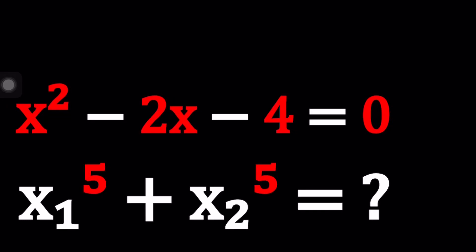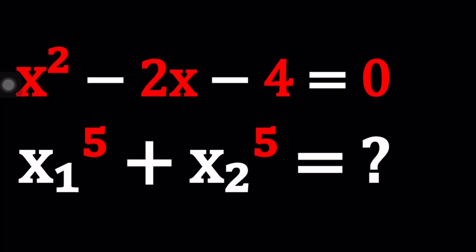Hello everyone. In this video, we're going to be solving a problem using Vieta's formulas. So we have x squared minus 2x minus 4 equals 0, x sub 1 and x sub 2 are the roots of this equation. And we're going to be finding the sum of the fifth powers of x sub 1 and x sub 2.